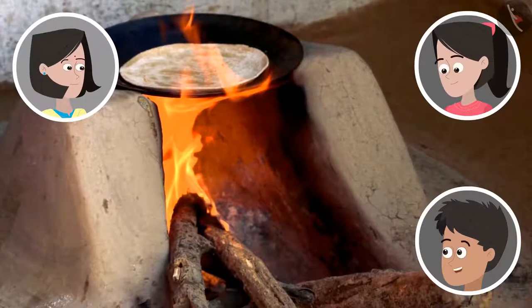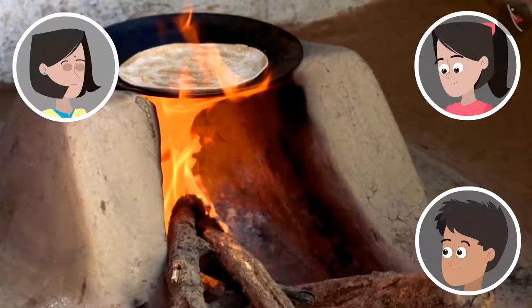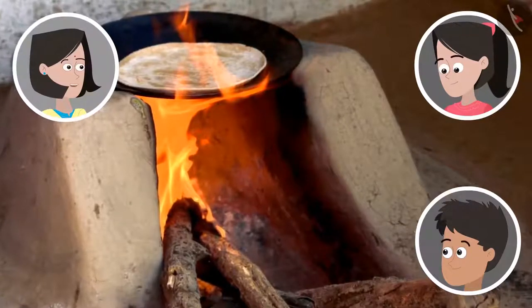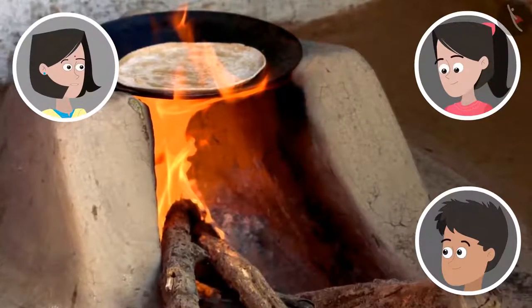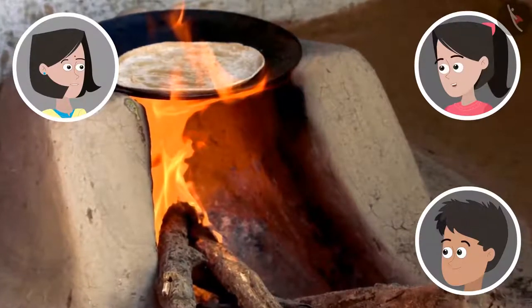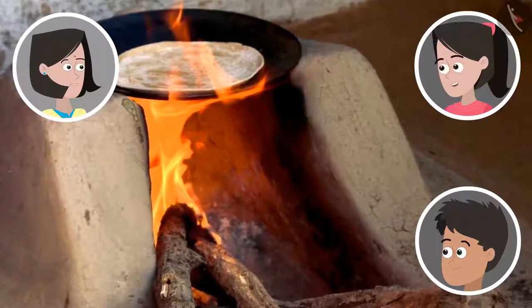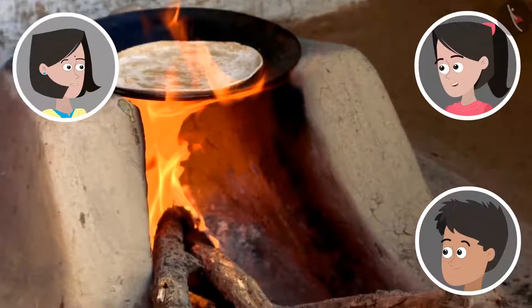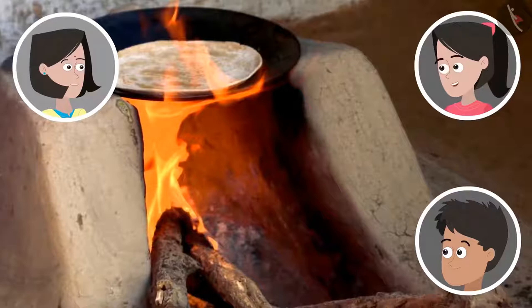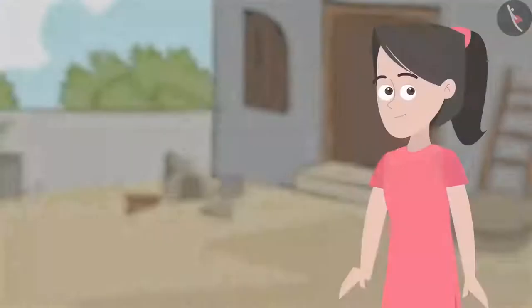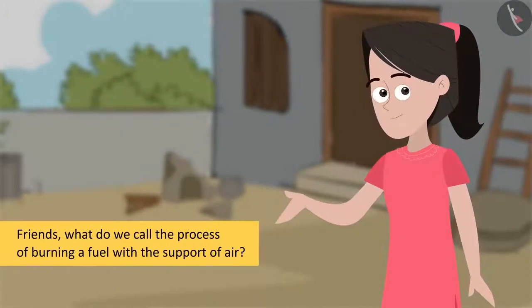I know. Semi-circular. Do you know why it is made semi-circular? I remember it now. Because for anything to burn at a continuous speed, it needs a steady supply of air. That is why a mud oven is made in a semi-circular structure. Friends, what do we call the process of burning a fuel with the support of air?